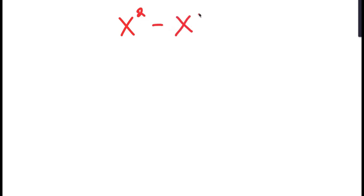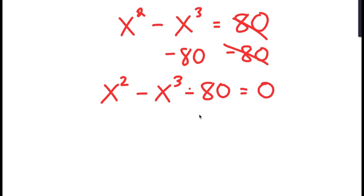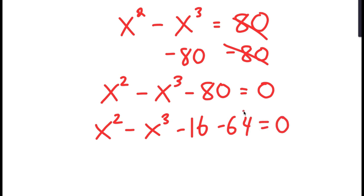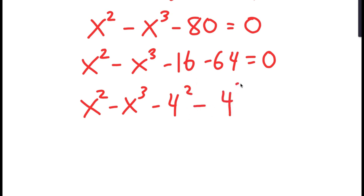In this video I'm going to solve the equation x squared minus x cubed is equal to 80. To solve this equation, I'm going to first start by subtracting 80 on both sides, so now I get x squared minus x cubed minus 80 is equal to 0. From here, I'm going to replace negative 80 with negative 16 minus 64. I'm going to rewrite negative 16 as negative 4 squared and negative 64 as negative 4 to the power of 3.